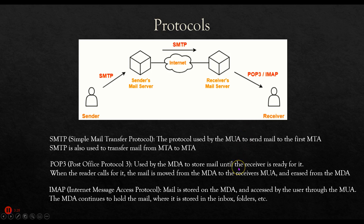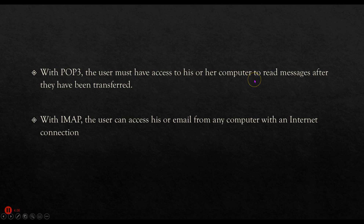That wasn't very useful given the mobility needs of people, so IMAP was invented — the Internet Message Access Protocol. With IMAP, the MDA stores that email permanently, and the receiver simply reads it through their MUA. The email does not leave the MDA; I can create folders and rearrange my email, but it stays on that server unless I delete it. So with POP3, the user must have access to their specific computer to read transferred messages, but with IMAP, the user can access email from anywhere and it'll always remain available.